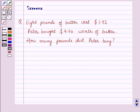Hello and welcome to the session. In this session, we will discuss a question which says that 8 pounds of butter cost 1.92 dollars. Peter bought 9.60 dollars worth of butter. How many pounds did Peter buy?